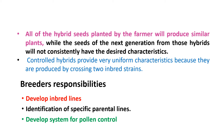The controlled hybrids provide very uniform characteristics because they are produced by crossing two inbred strains. Breeders have the responsibility to develop inbred lines, identify the specific parental line, and develop a system of pollen control.